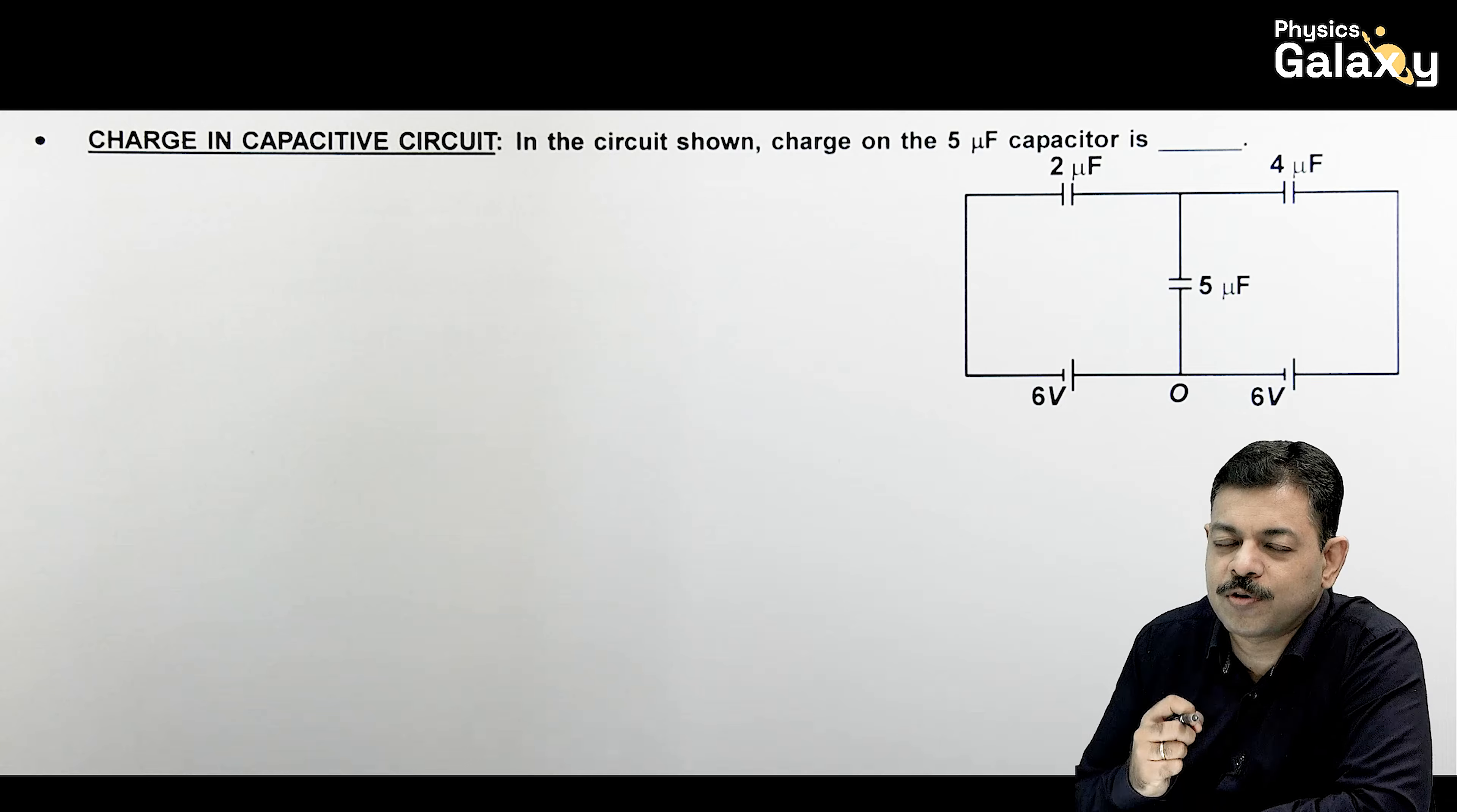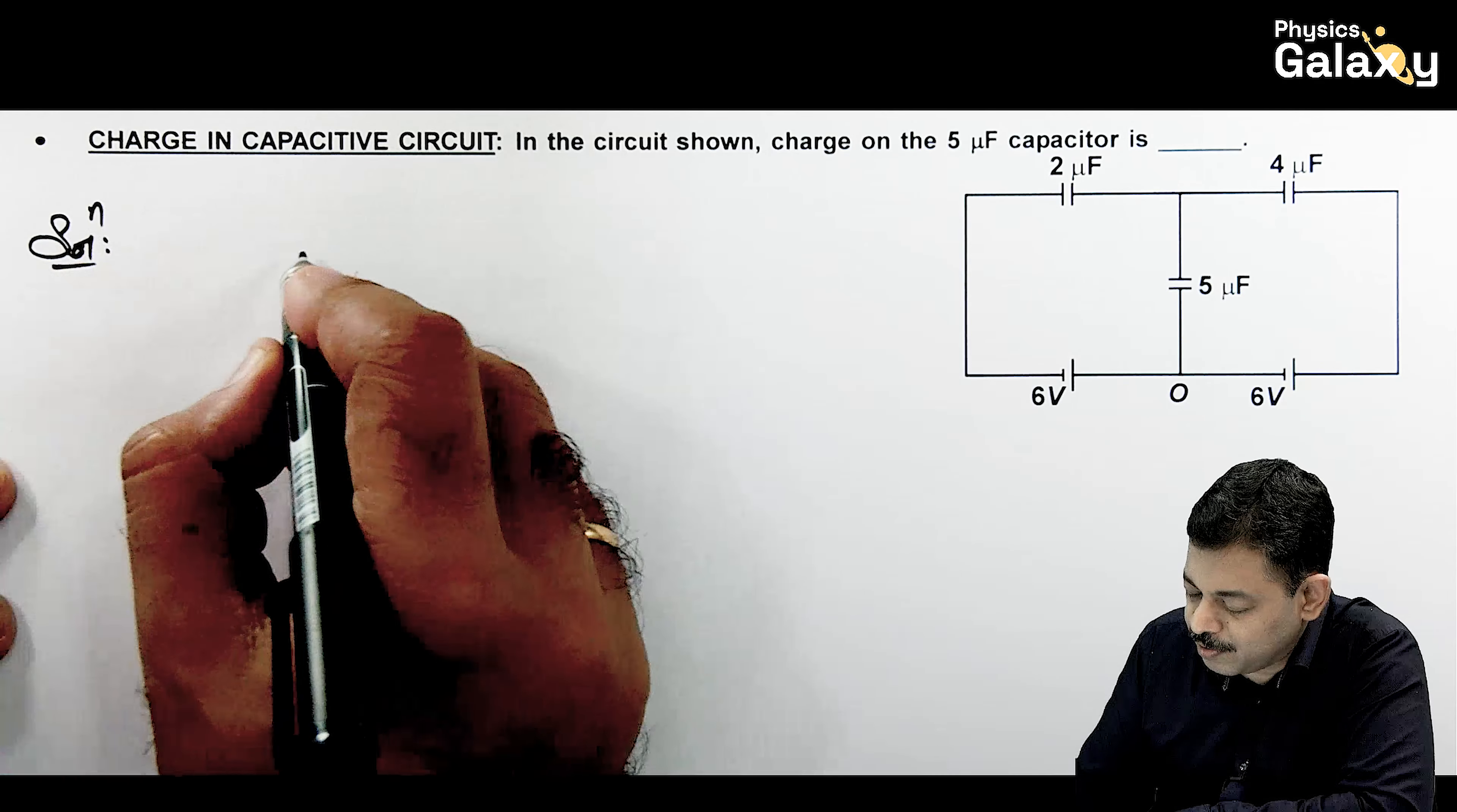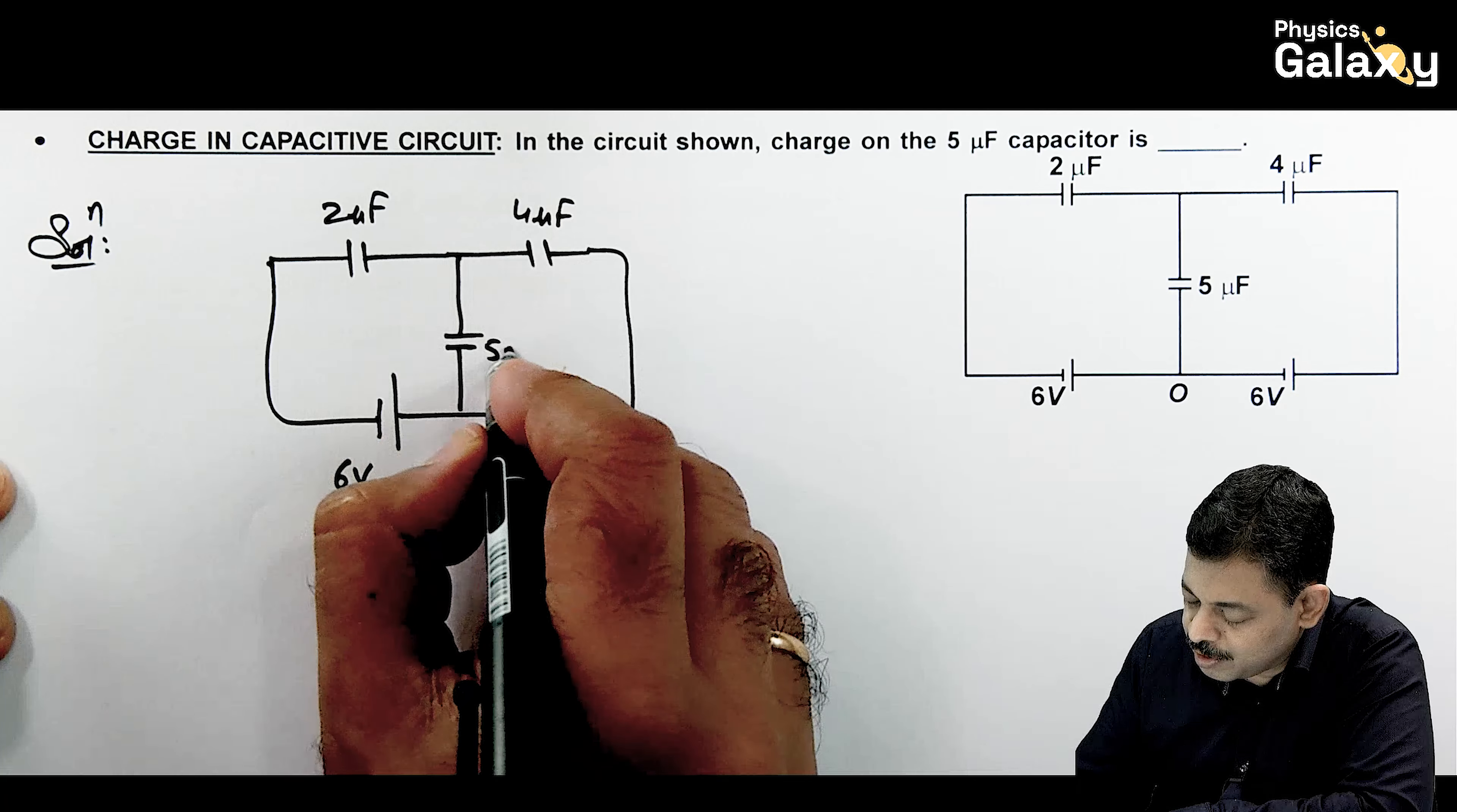So this is another case of nodal analysis. We will talk upon the distribution of charge in a capacitive circuit. So it is simply asking the charge on 5 microfarad capacitor. When it comes to this type of question, that will be considered as a steady state charge. So in this question, we can directly write if this 2 microfarad capacitor, then it is connected to 4 microfarad. And there are two batteries of 6 volt each. And there is another 5 microfarad capacitor connected over here.